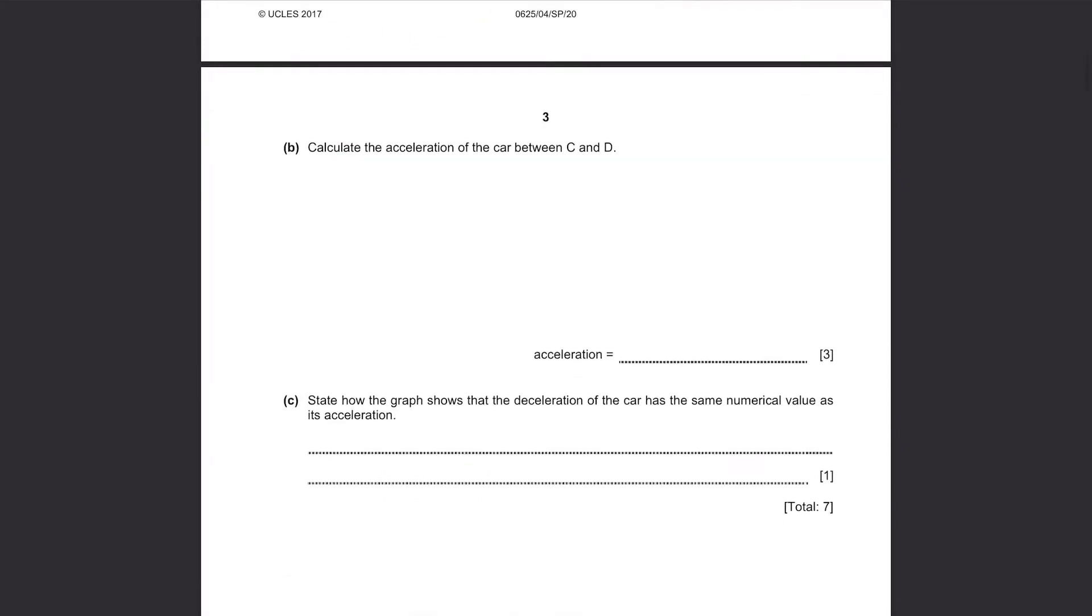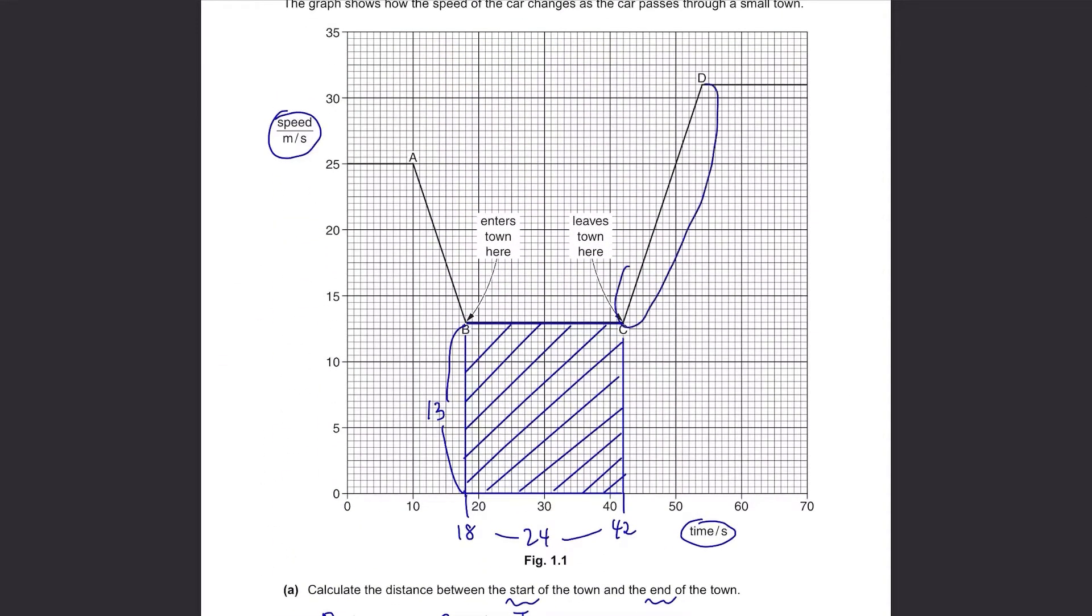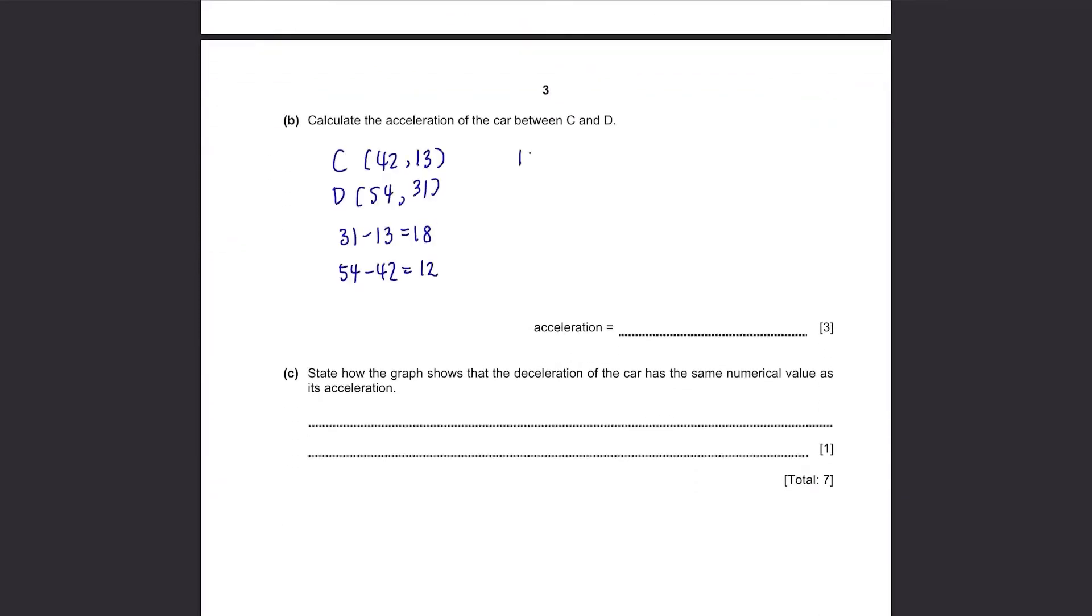Part B. Calculate the acceleration of the car between C and D. We have a slope from C to D here and we know that to find the acceleration from the speed time graph, we need to find the gradient of the graph. To find the gradient, identify the coordinates of C and D first. They are 42 and 13 for C and 54 and 31 for D. Then we calculate the gradient by finding the difference in y-coordinates and x-coordinates, which are 18 and 12 in this case and divide the difference in y with the difference in x. The answer is 1.5m per second squared.